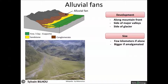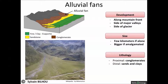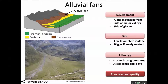The size of the grains tends to be finer as we go farther from the slope. Indeed, conglomerates are deposited close to the source, and silts are deposited farther. However, the sediments are poorly sorted and there is a high content in fine grain even close to the source, so the reservoir quality of these sediments tends to be poor.